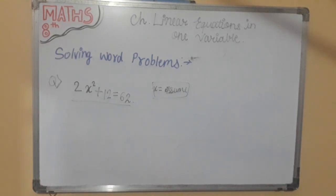After that we have to find the number. So we will write 2x square plus 12. We will get transposed. 62 minus 12.